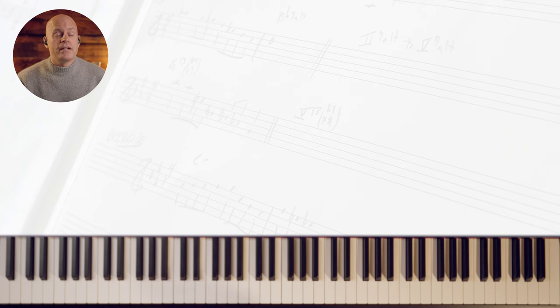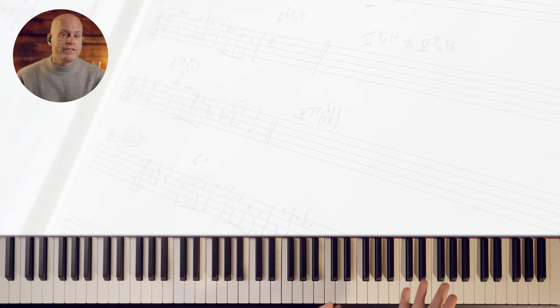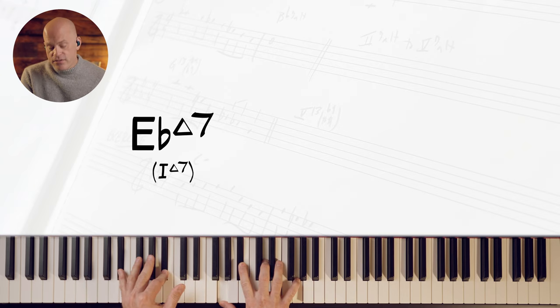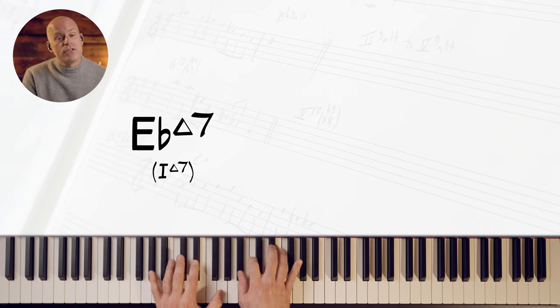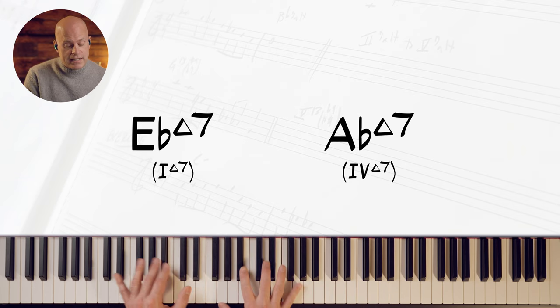Okay so all that just from chromatic approaches are very important to create movement when you're comping for somebody. Okay last bar here. This is the two five going to the four. It's a two five of the four. We're moving from to the four chord, which is the four chord of E flat.